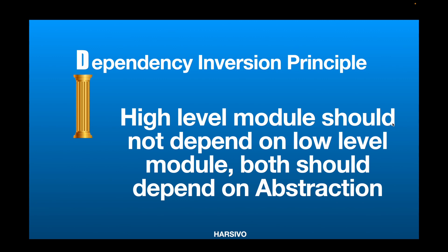In the same way, when you're writing code, your high-level module — like if you're creating a website or a mobile application — the UI of your web page or mobile page should not depend on the low-level module. The low-level module can be something like a database. Which database you're using, where you're getting the data from — all these details should be hidden behind an abstraction and not written in the high-level module itself.